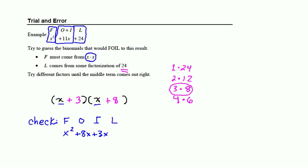And L is my last product, that's the product of the last terms in each of those binomials, that is going to be plus 24. Then I add my outer and inner together to get x squared plus 11x plus 24.